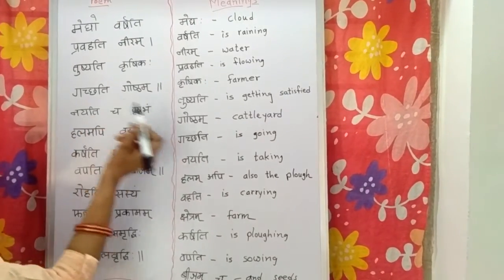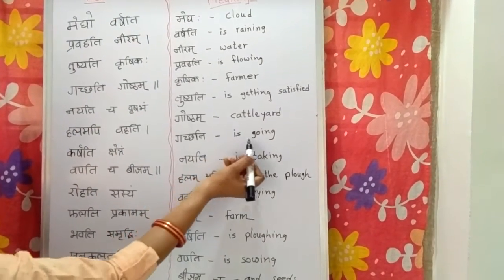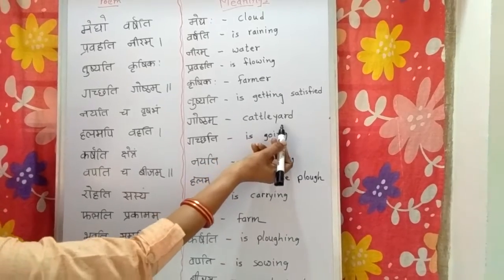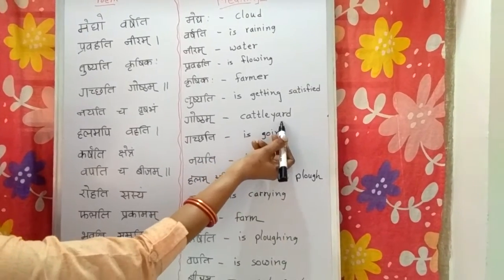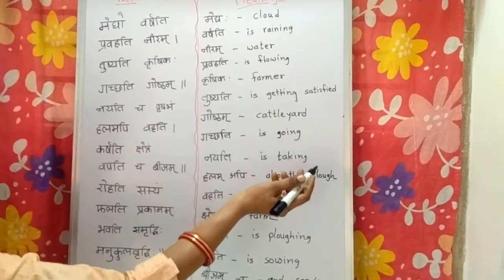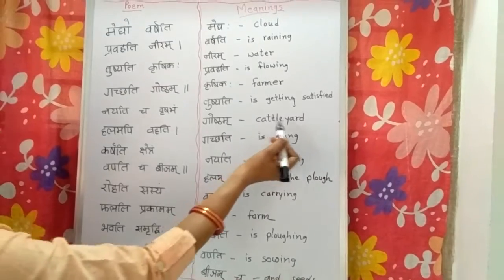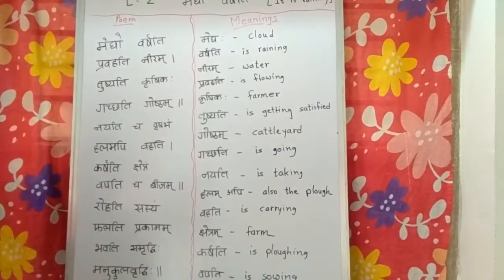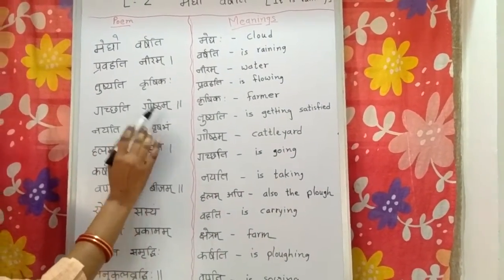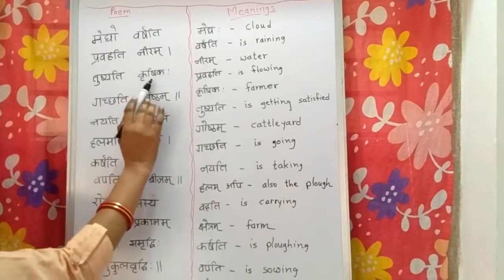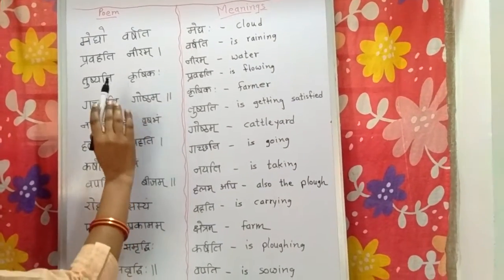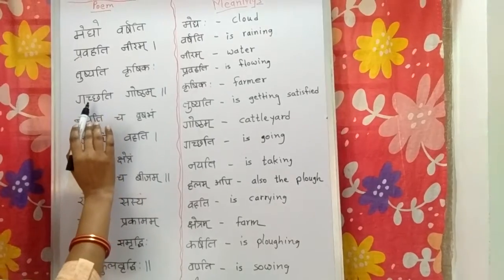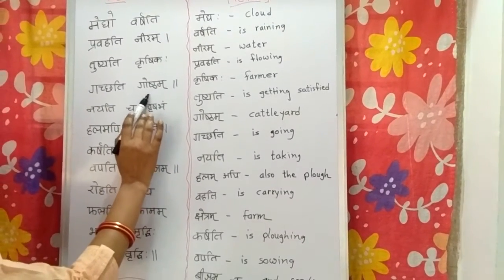Gachchati Ghostham — Gachchati means is going, and Ghostham means cattle yard. Cattle yard means जहाँ पे domestic animals जैसे गाय-बैल होते हैं उन्हें रखा जाता है — where domestic animals are kept. So Tushyati Krushikaha Gachchati Ghostham: the farmer is getting satisfied and going to the cattle yard.